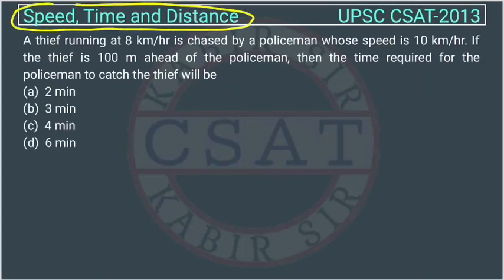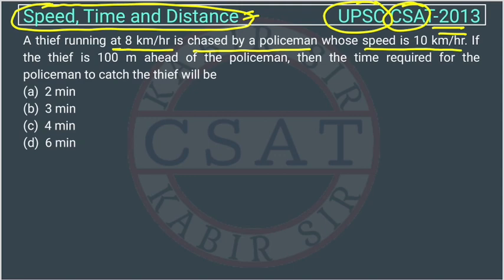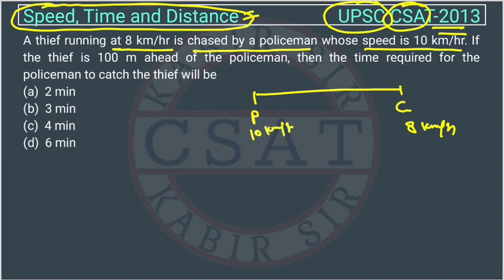This is a question from the speed, time and distance chapter, asked by UPSC in their CSAT paper of 2013. A thief running at 8 km per hour is chased by a policeman whose speed is 10 km per hour. Suppose this is the thief and this is the police. The thief is 100 meters ahead of the policeman, so the distance between them is 100 meters.